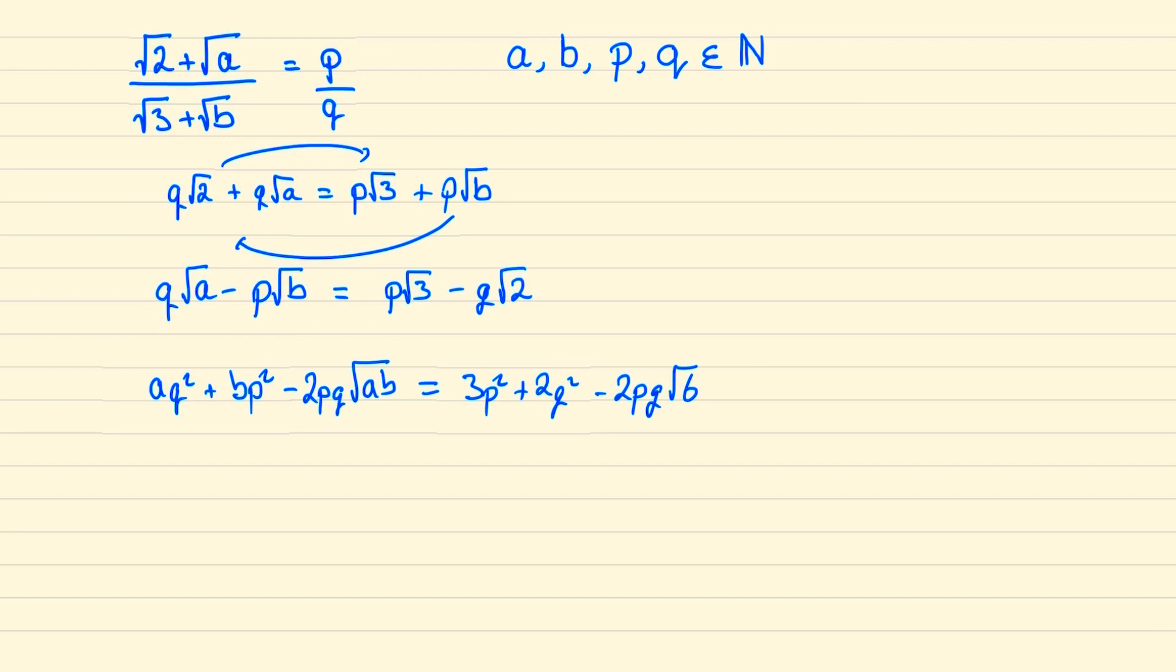But now notice that given a, b, p and q are natural numbers then these two parts in green will be integers. And so because root 6 is irrational it must follow that root 6 is root ab or in other words ab is equal to 6.